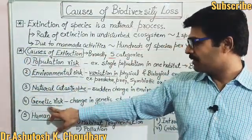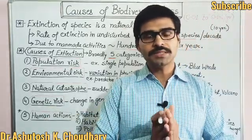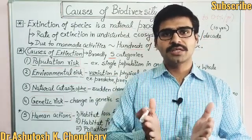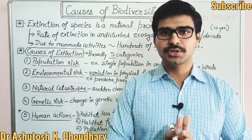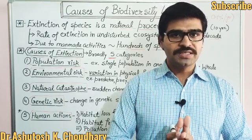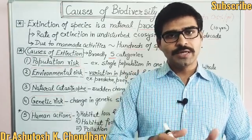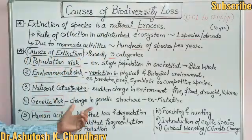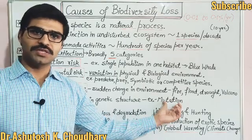The next is genetic risk. Genetic risk means change in the genetic structure of a species, which is generally called mutation. This may be due to environmental conditions, pollution, or ultraviolet radiation. If there is any change in the genetic structure of a living organism, that causes mutation, and that mutation is responsible for the loss of biological diversity.